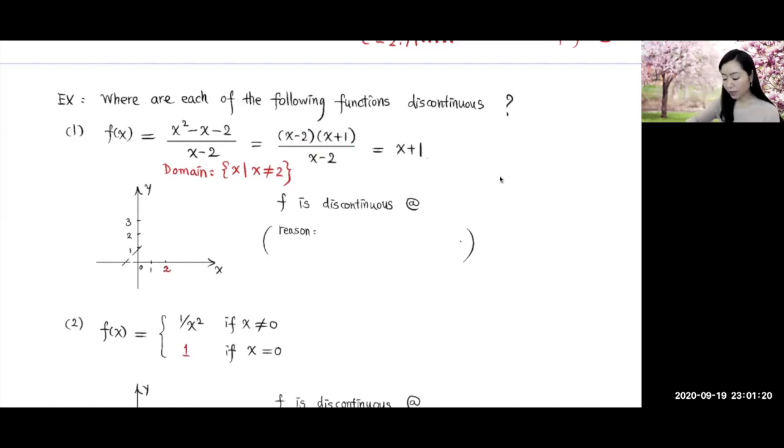So the graph of this function will be almost the same as x plus 1, which is going to be a straight line like this, with 1 being the y-intercept and slope being 1. However,